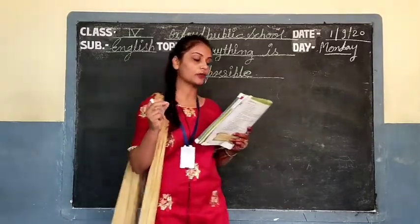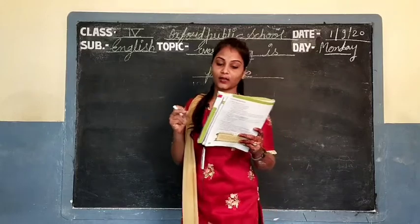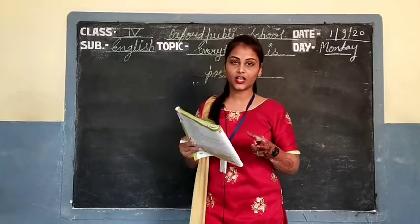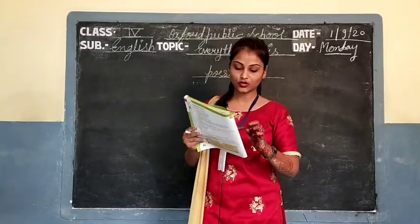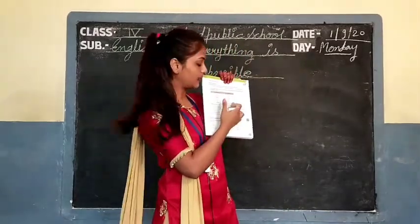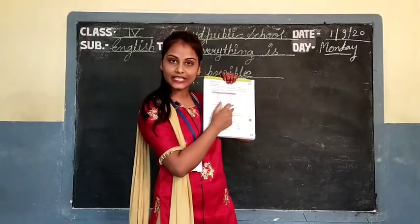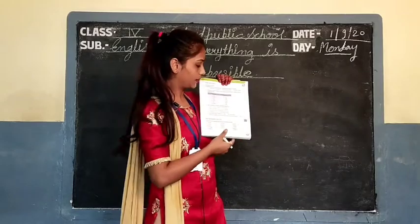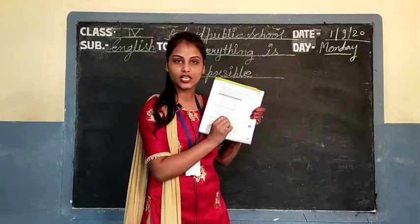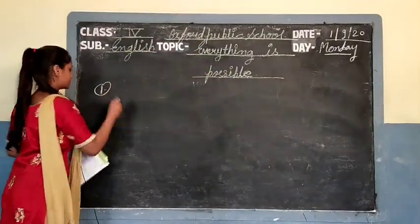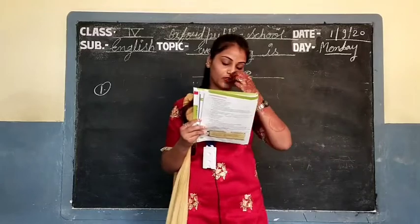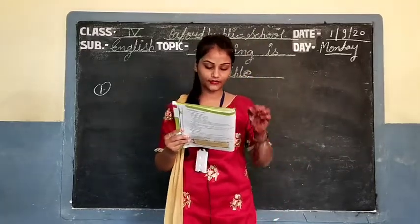Choose words from Column A and match them with those in Column B to form compound words. A और B column में कुछ words दिए गए हैं, अब हमें उन्हें match करना है। और नीचे जो B में fill-ups दिए हैं, उन्हें fill करना है। पहले A and B column के words को combine करके एक word बनाना है, और फिर उस new word को correct column में fill करना है।